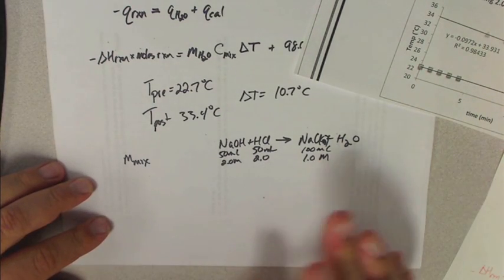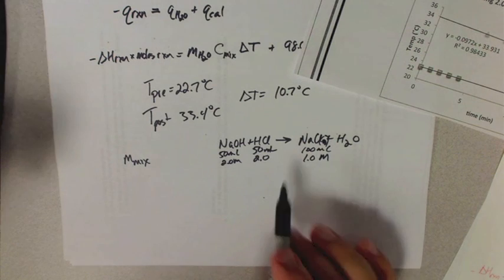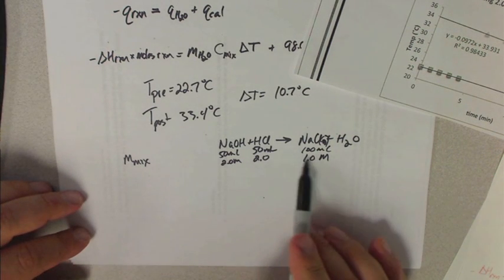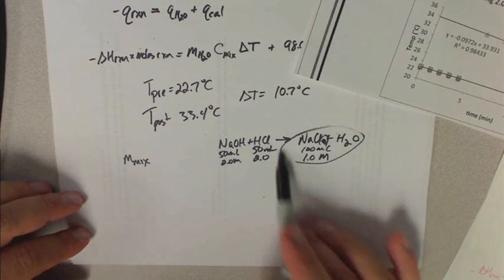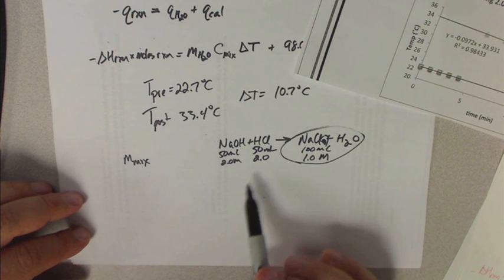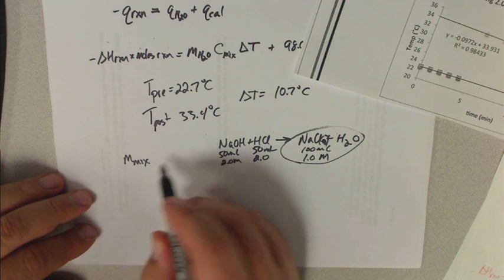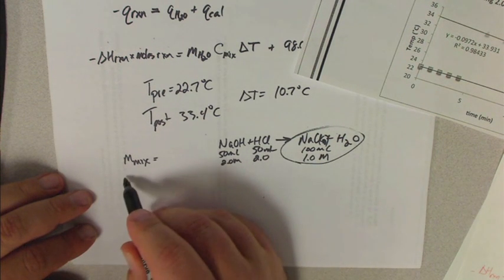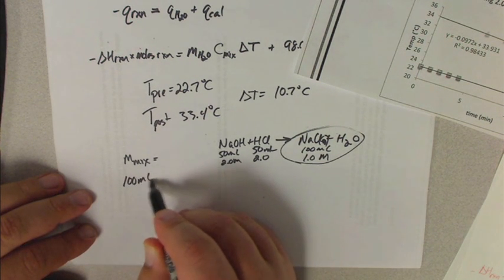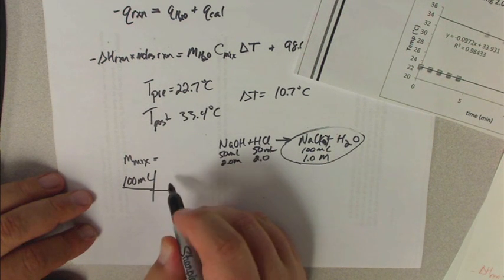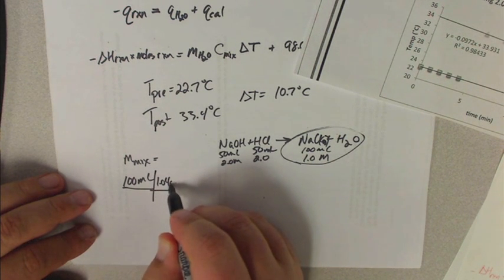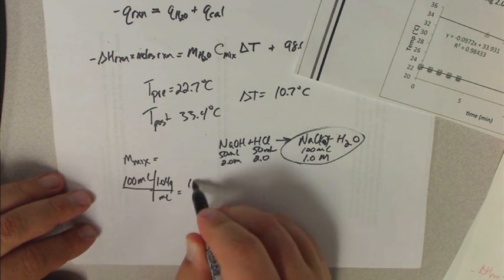So if you look in the tables, and of course, if you have something else, then it's going to be a different reaction. Maybe two hydrogens are being transferred. You can look up in the lab manual, and it has the density and the heat capacity of 1 molar sodium chloride. So in this case, the mass of the mix is going to be equal to 100 mils. And the density of this, if you look it up, is 1.04 grams per mil. So that ends up being 104 grams.